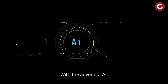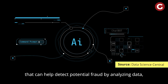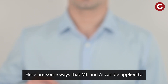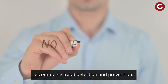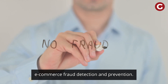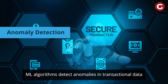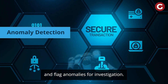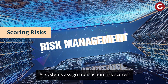With the advent of AI, we own powerful tools that can help detect potential fraud by analyzing data, identifying patterns, and looking at anomalies. Here are some ways that ML and AI can be applied to e-commerce fraud detection and prevention. Anomaly detection: ML algorithms detect anomalies in transactional data and flag anomalies for investigation. Scoring risks: AI systems assign transaction risk scores based on transaction history, user behavior, geolocation, and device information.